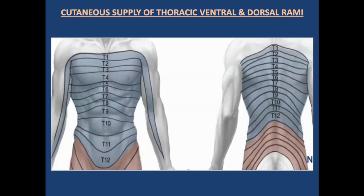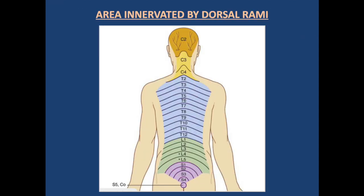This diagram shows the cutaneous supply of the thoracic ventral and dorsal rami, and another diagram shows the area innervated by the dorsal rami.